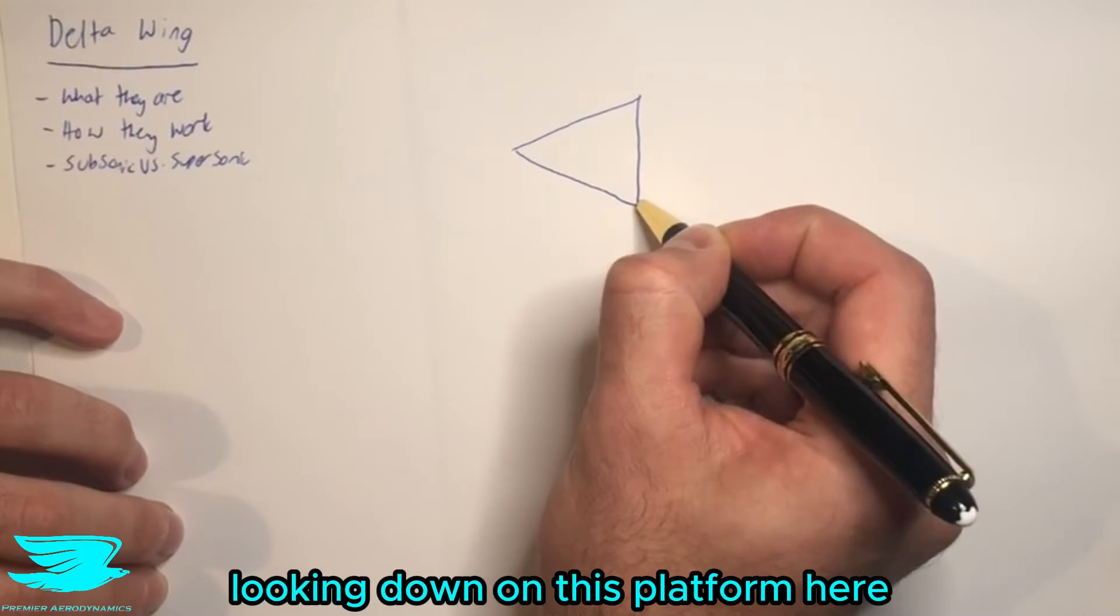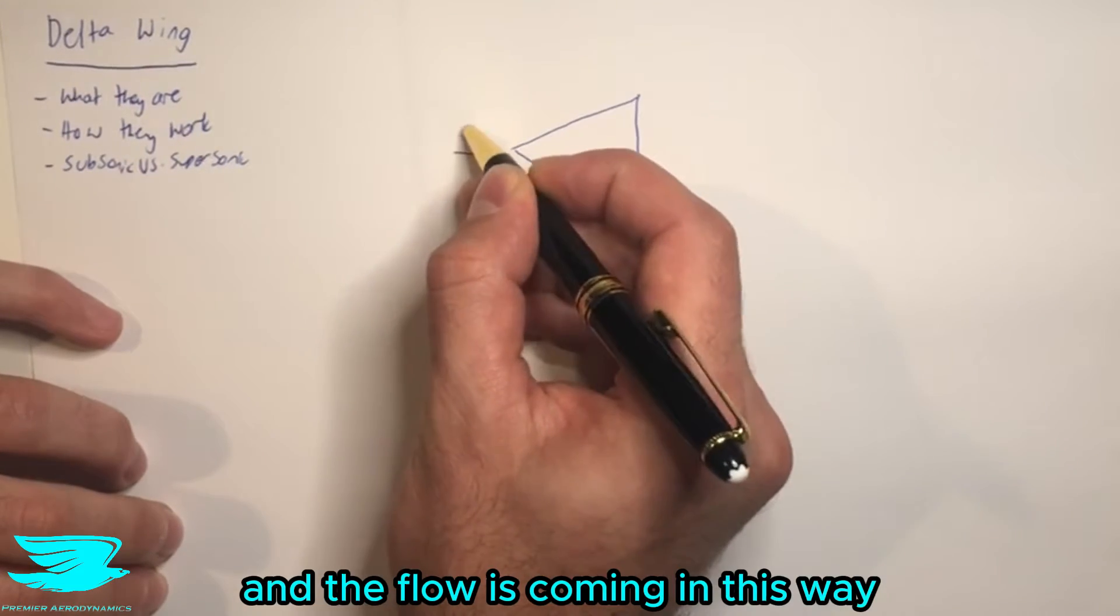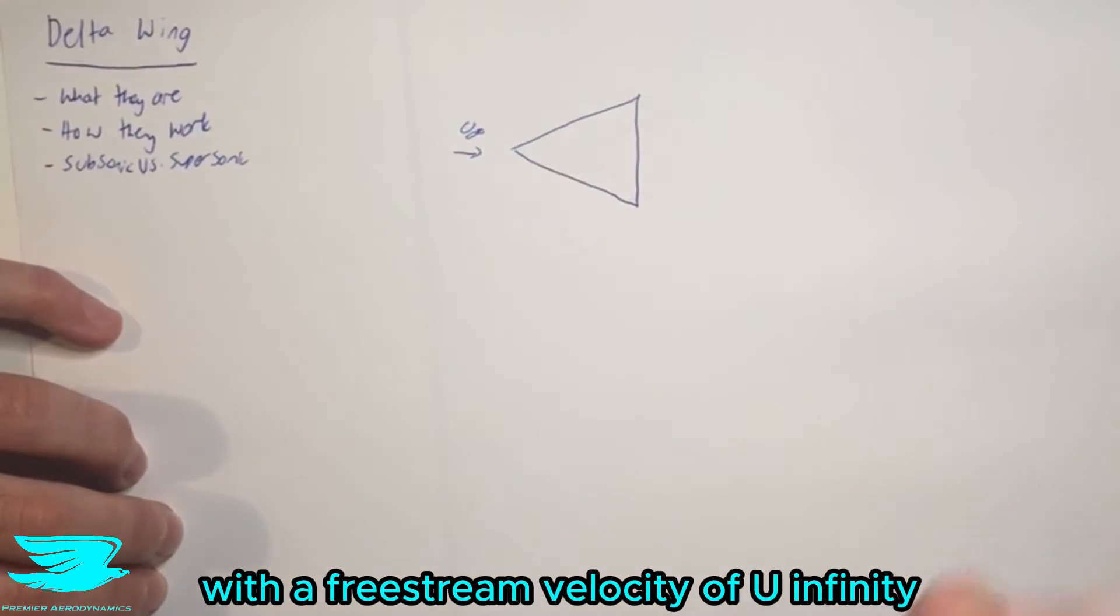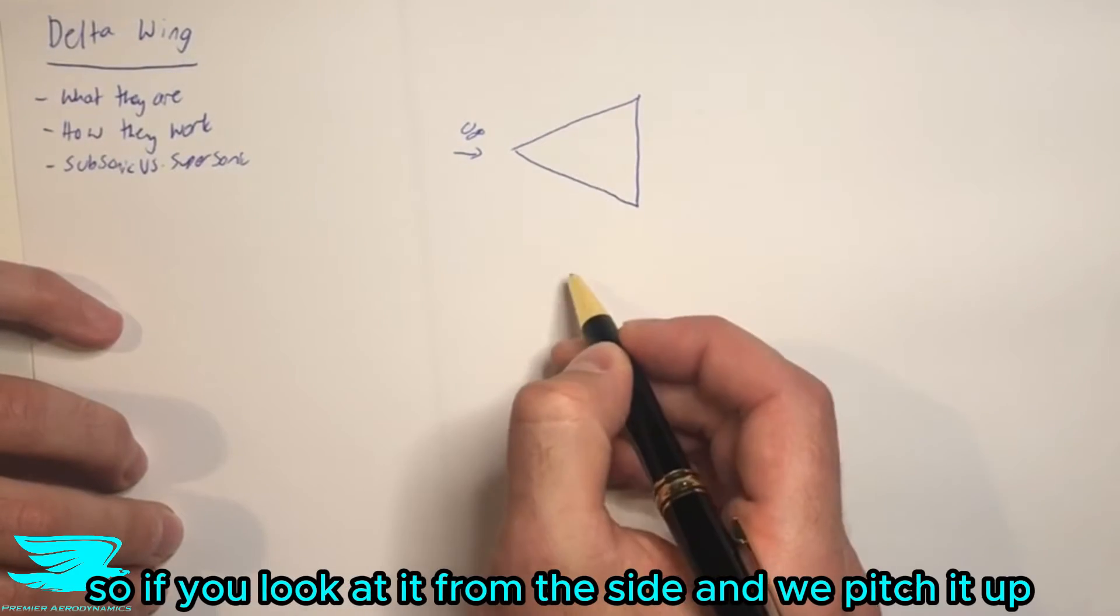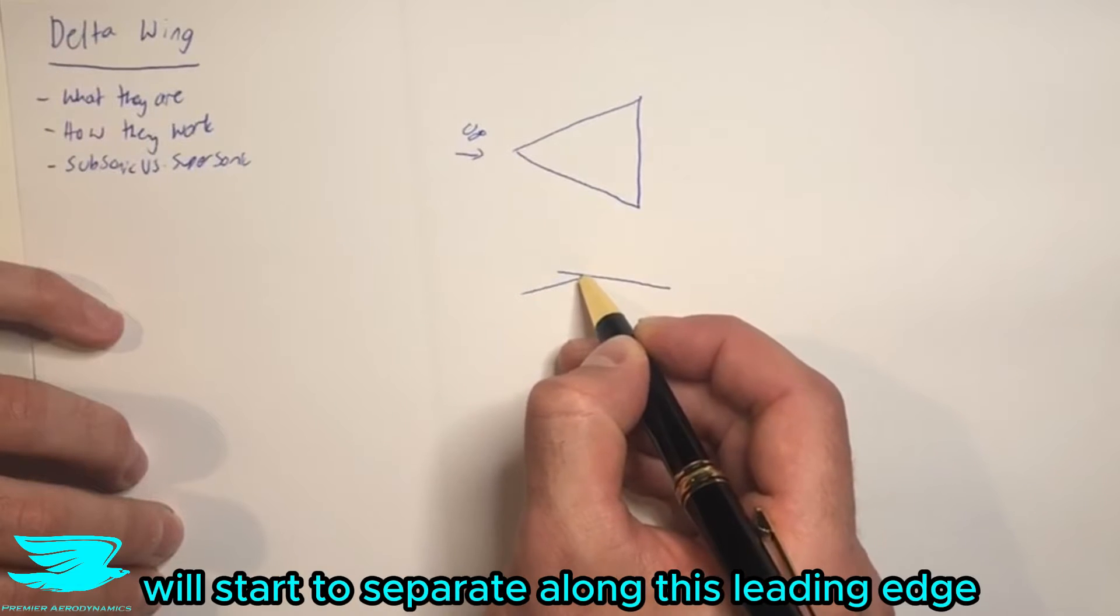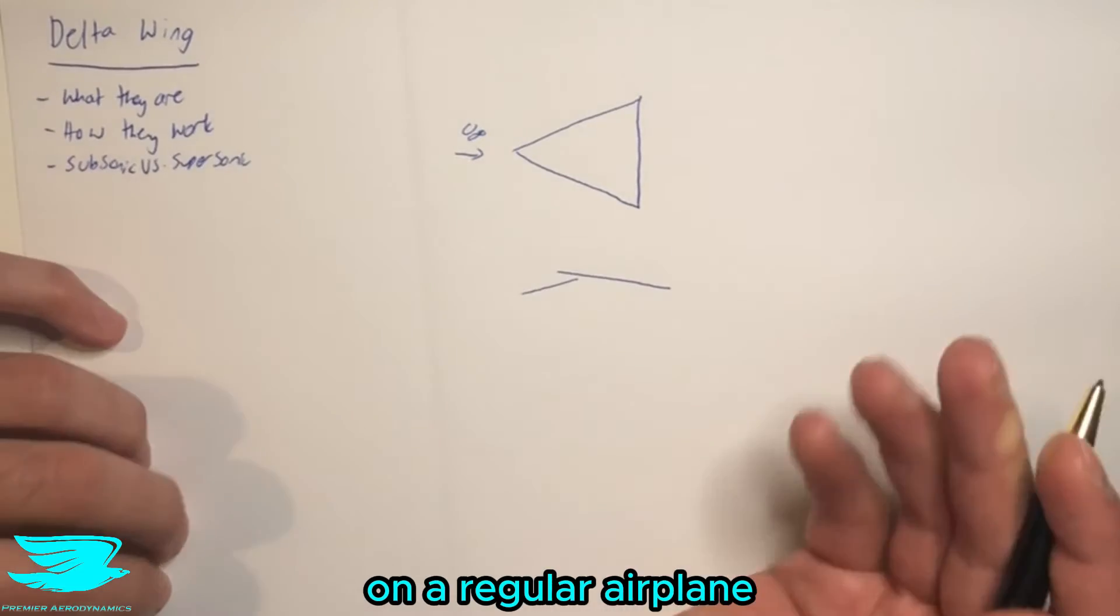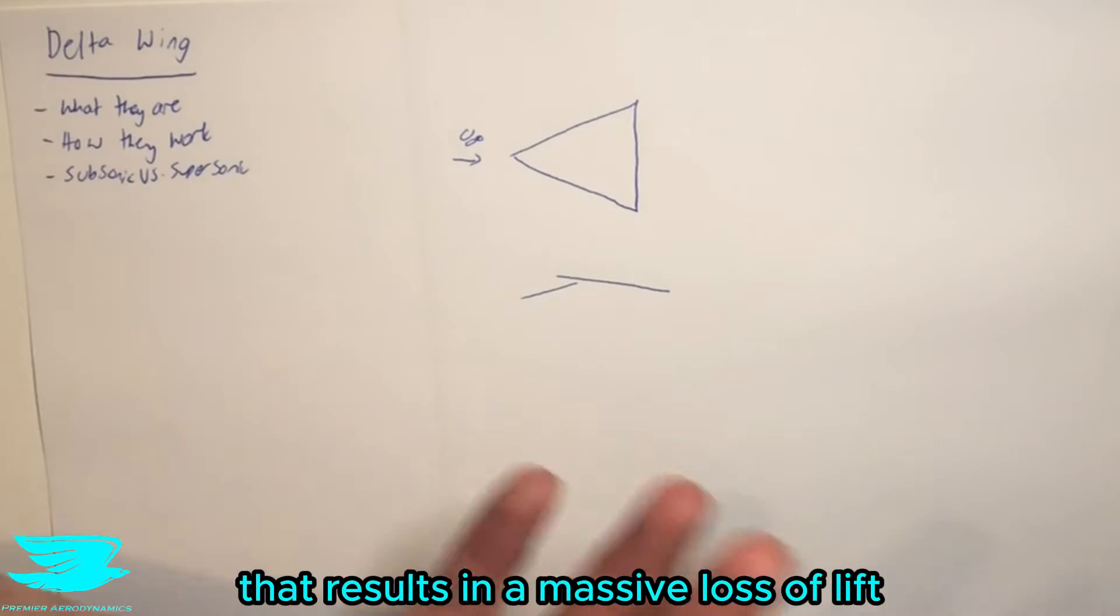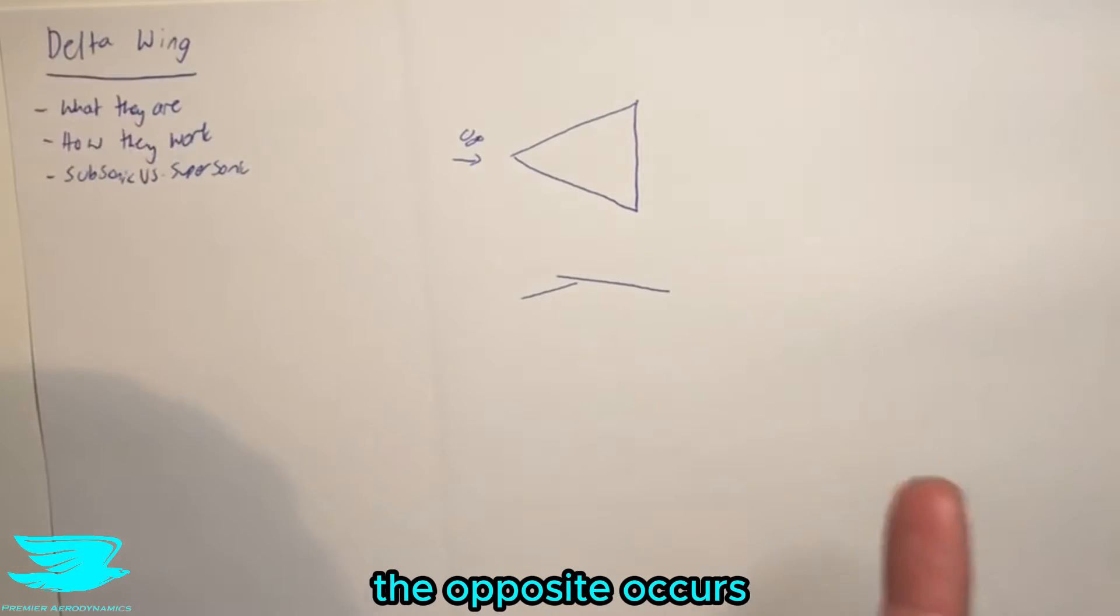Let's say we have, looking down on this platform here, this is the shape that it is, this triangle, and the flow is coming this way with a freestream velocity of U infinity. Now as we pitch the delta wing up, so if you look at it from the side and we pitch it up, the flow coming along here will start to separate along this leading edge. Now is that good or bad? On a regular airplane, that's usually pretty bad. That results in a massive loss in lift, but for a delta wing, the opposite occurs.